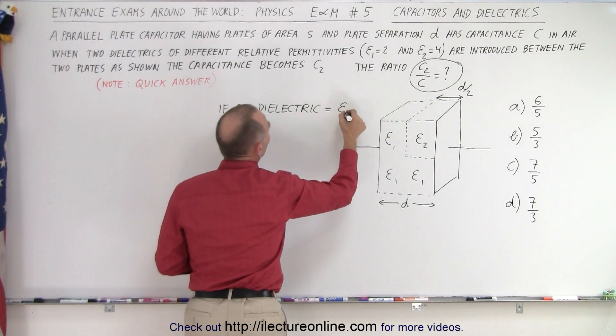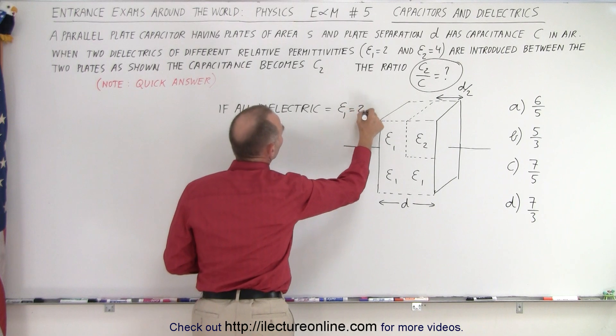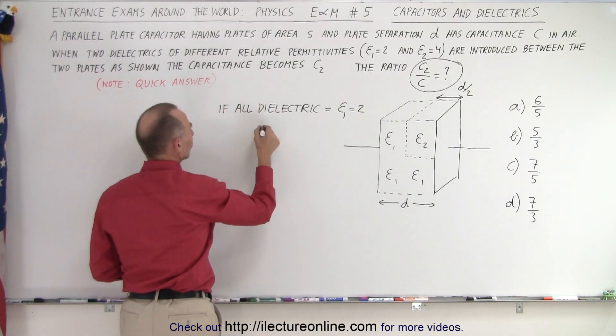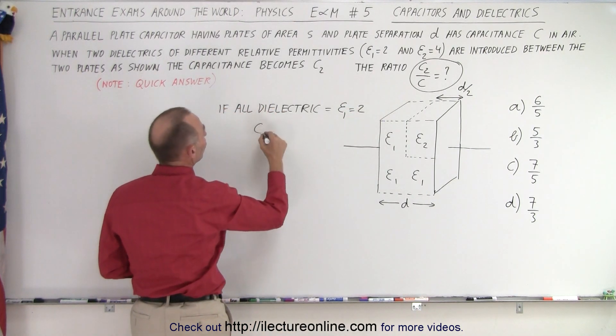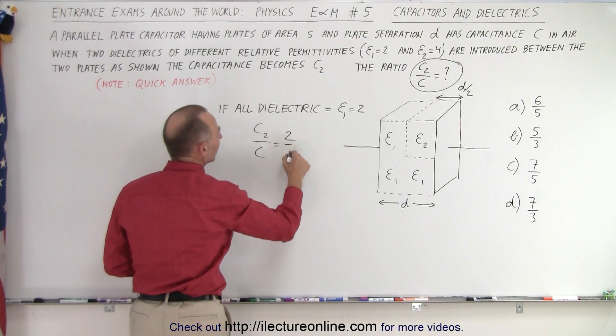Then the ratio c2 over c is going to be equal to 2 to 1.